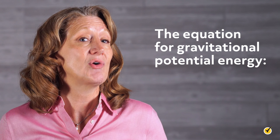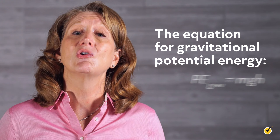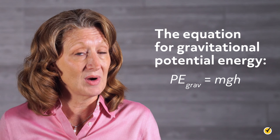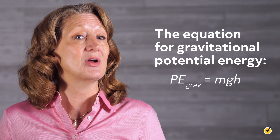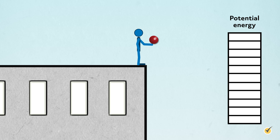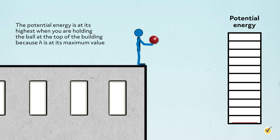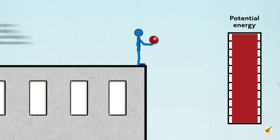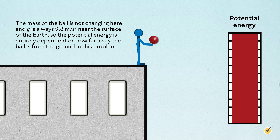As you might imagine, the name comes from the fact that we are dealing with the gravitational force. The equation for gravitational potential energy is: gravitational potential energy equals mass times acceleration times the height of the object from the ground. The mass of the ball is not changing, and g is always 9.8 meters per second squared near the surface of the Earth.